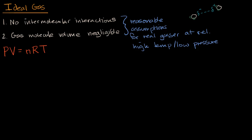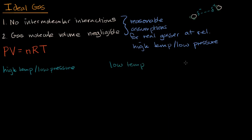Let's think about why the ideal gas law is reasonable for most gases at relatively high temperatures and low pressures, and where it breaks down as we approach the condensation point. Let's consider three cases: high temperature and low pressure, low temperature, and high pressure.